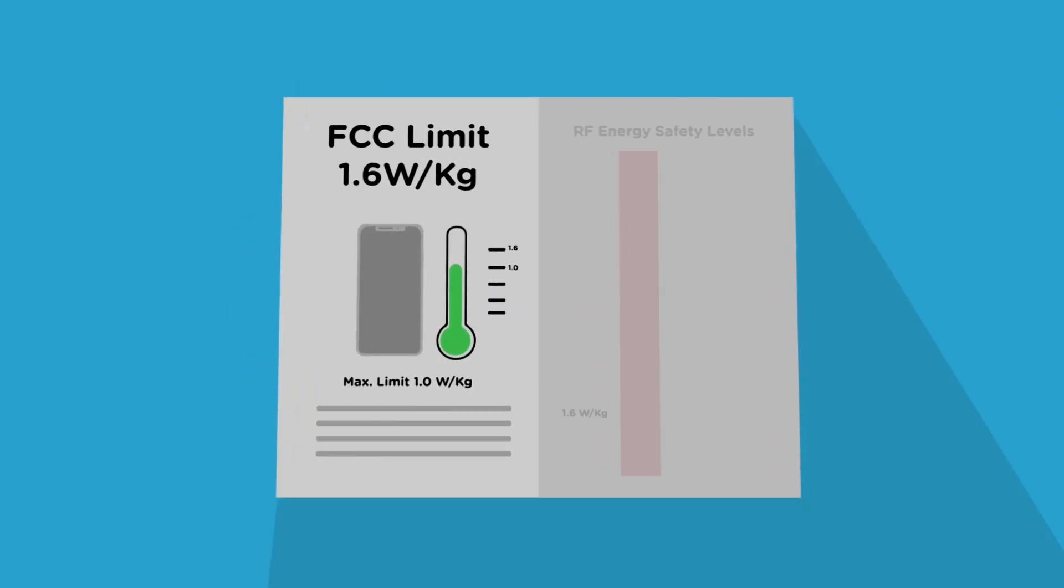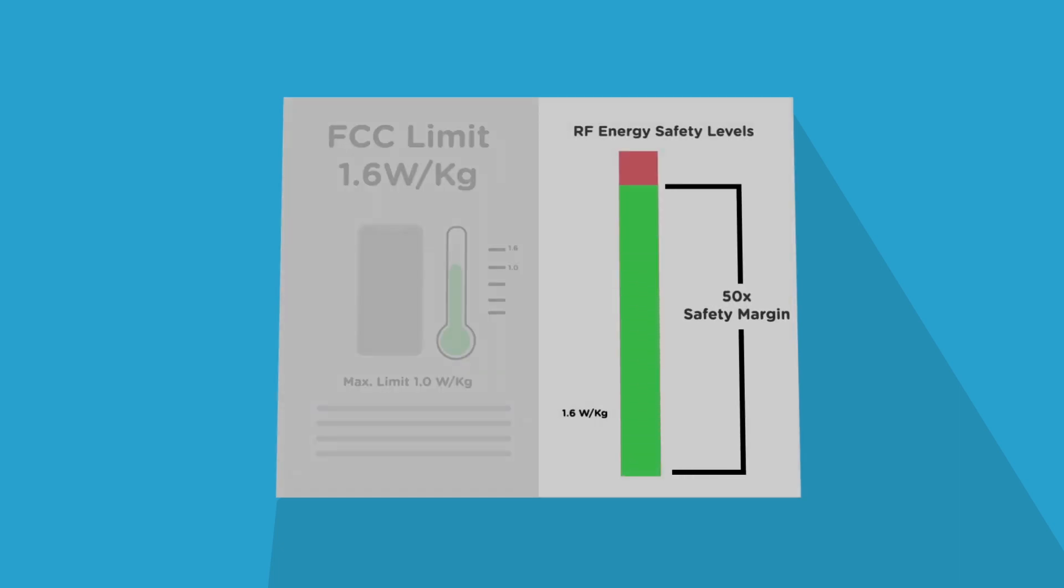Many companies even publish their SAR levels to show that they comply with the FCC limit of 1.6 watts per kilogram. In fact, this limit is ultra conservative with over 50 times safety margins.